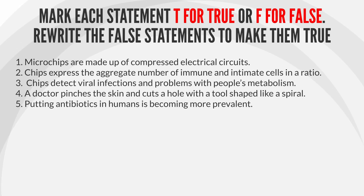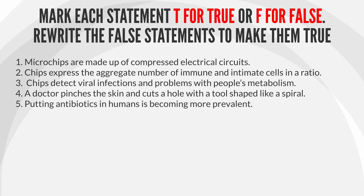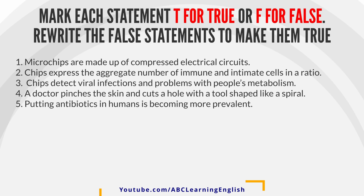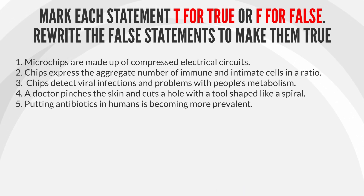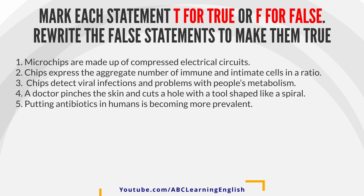1. Microchips are made up of compressed electrical circuits. 2. Chips express the aggregate number of immune and intimate cells in a ratio. 3. Chips detect viral infections and problems with people's metabolism. 4. A doctor pinches the skin and cuts a hole with a tool shaped like a spiral. 5. Putting antibiotics in humans is becoming more prevalent.